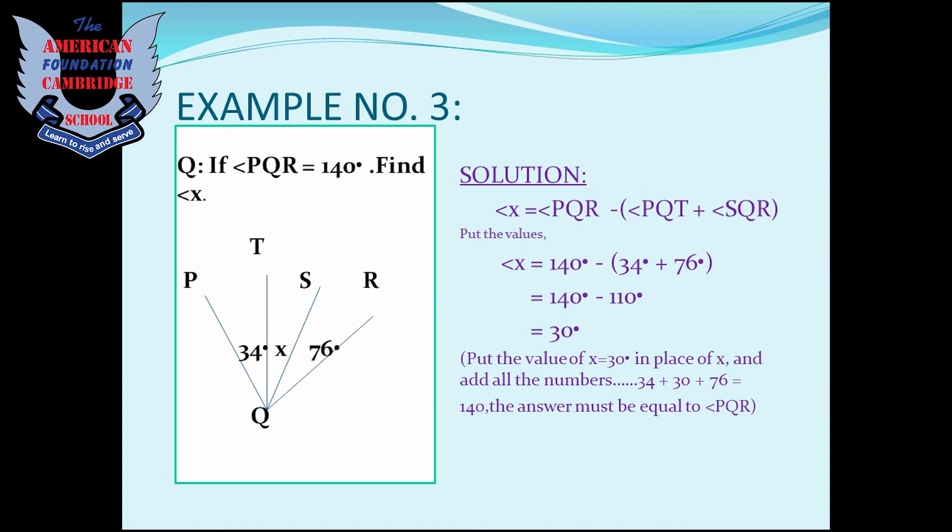Solution: Here we are following the same method as we did in example number 2, but the only difference is that first we add both the given angles, that is angle PQT that is 34 degrees and angle SQR that is 76 degrees, and then we subtract it from angle PQR that is 140 degrees.